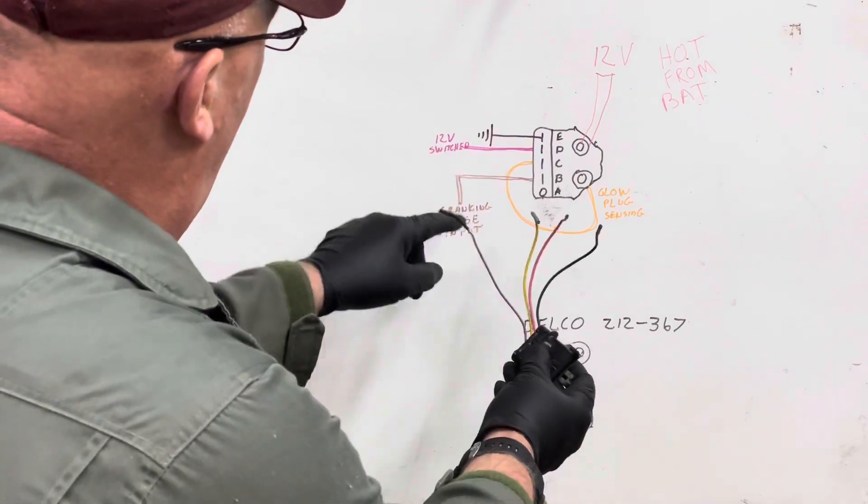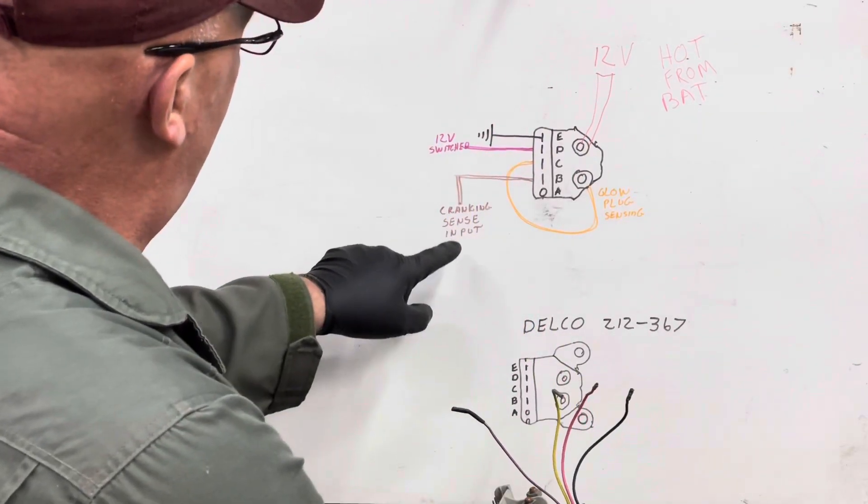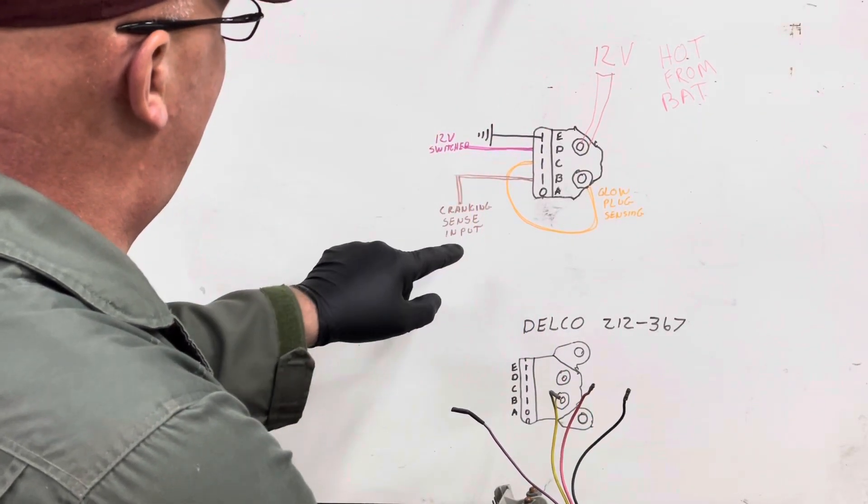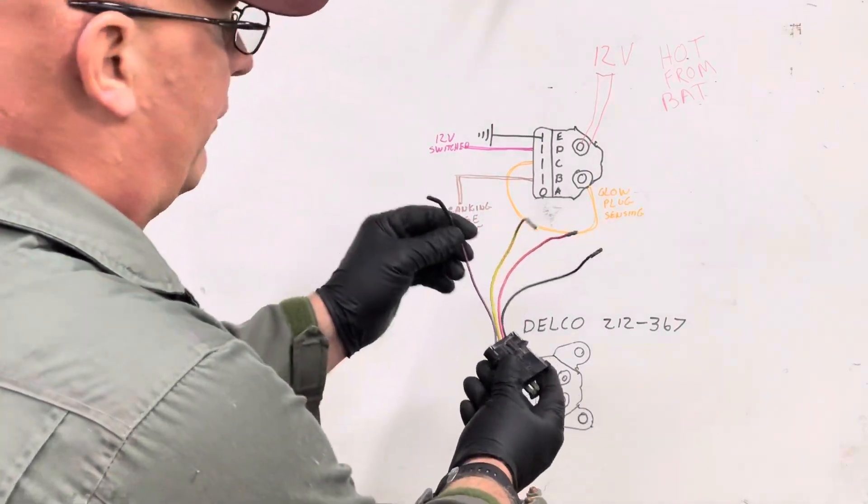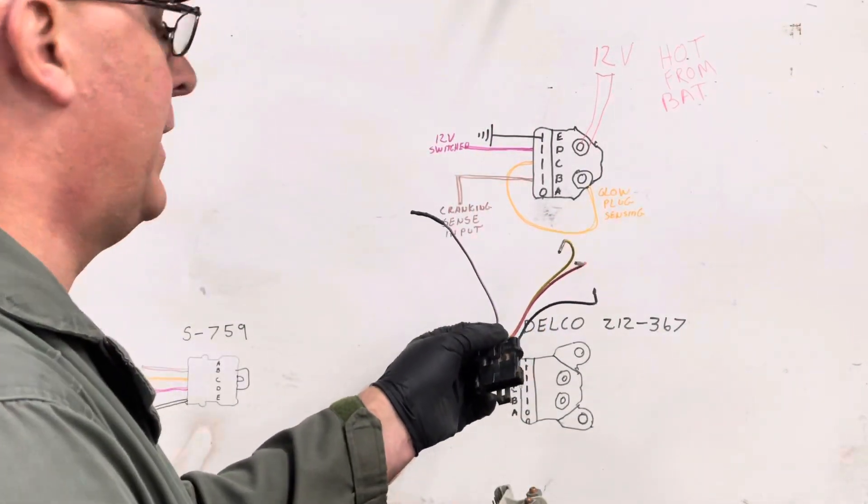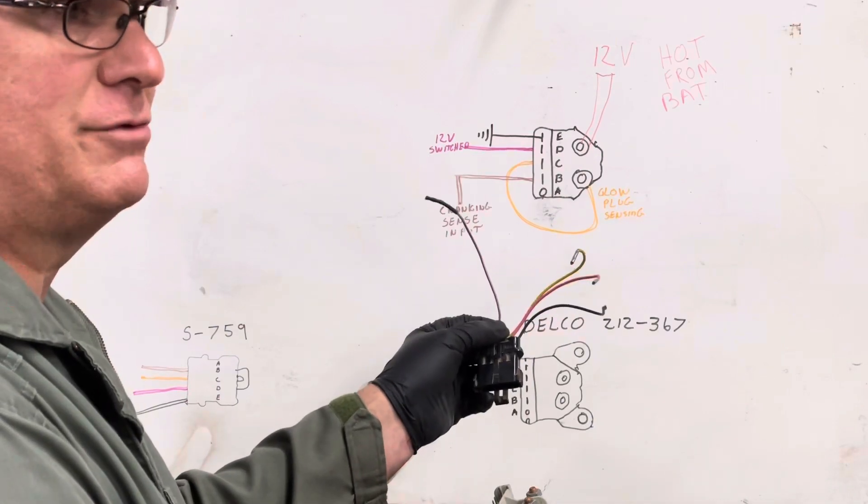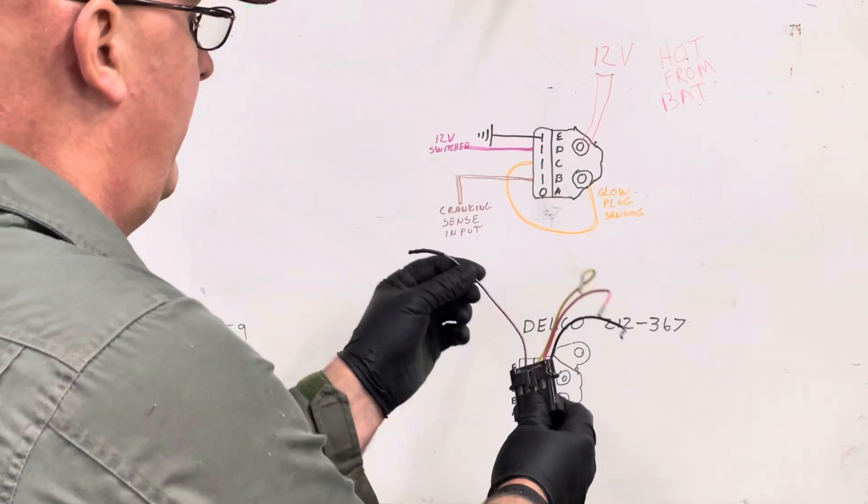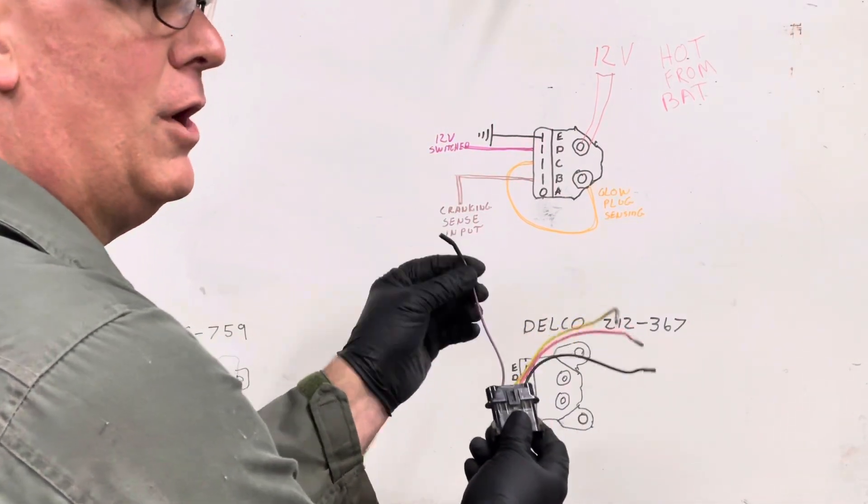You notice I don't have purple in my little fancy set either. Cranking sensing input - there's a purple wire. If you have a Chevrolet that goes to the starter solenoid to sense start. This purple with a white wire goes to that wire.